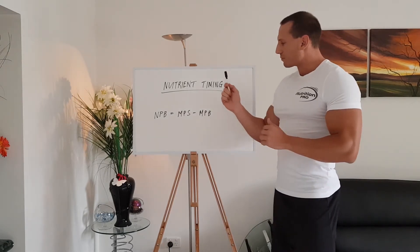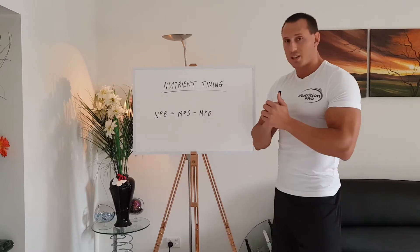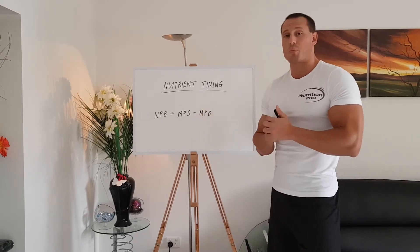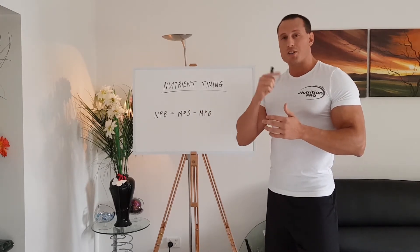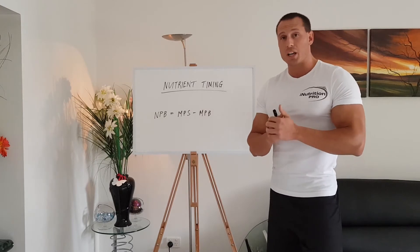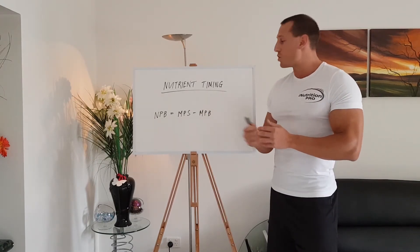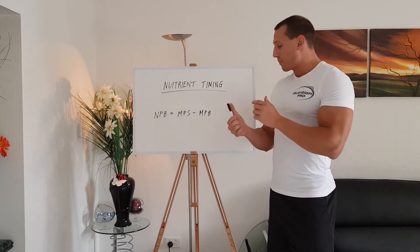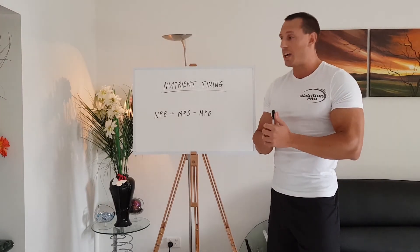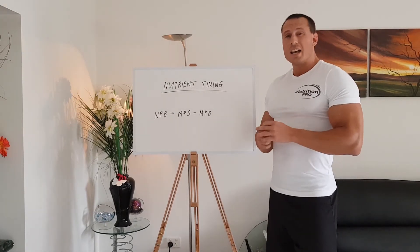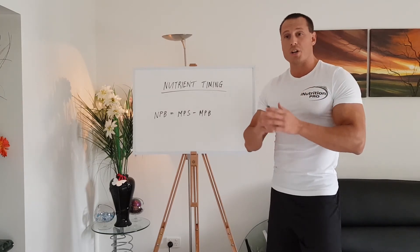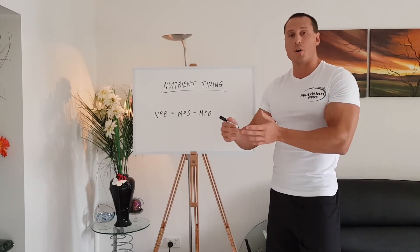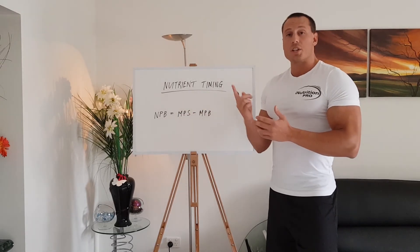Quick recap: net protein balance is the difference between muscle protein synthesis and muscle protein breakdown. Ingesting protein or amino acids increases muscle protein synthesis. We want to aim for about 0.25 to 0.4 grams of protein per kilo per meal, roughly at three-hour intervals, to maximize muscle protein synthesis throughout the day. Muscle protein breakdown is mitigated by protein, carbohydrate, and fat. For ectomorph body types, consuming more carbs around training is beneficial because insulin — stimulated by carbohydrates — is an anti-catabolic hormone that prevents muscle tissue breakdown and helps increase net protein balance throughout the day.